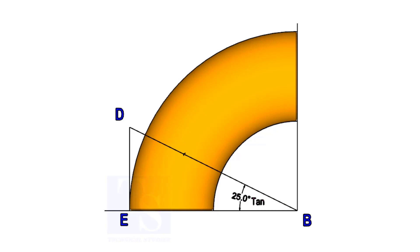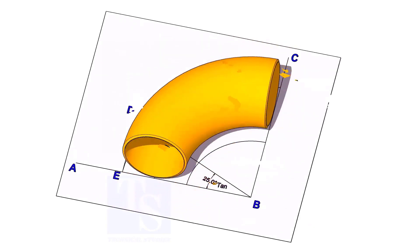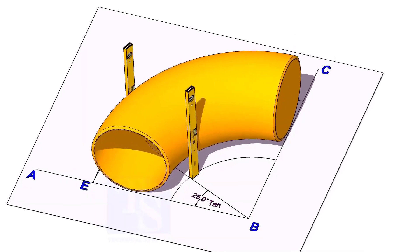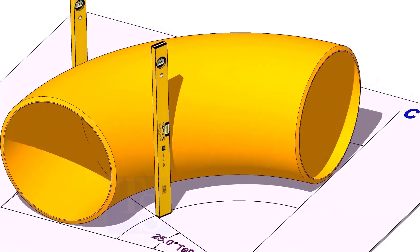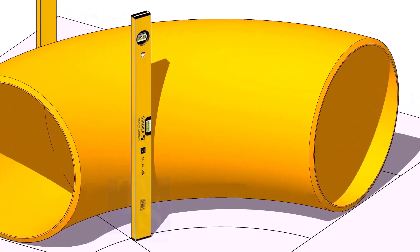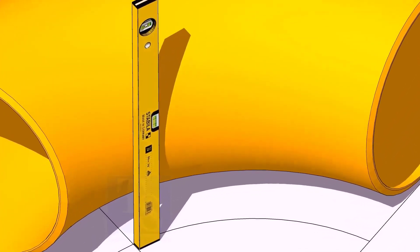Now, put the elbow exactly on the layout as shown. Hold two large level bottles at the edge of the elbow on both sides vertically, and strike a mark where the level bottle edge touches the elbow.